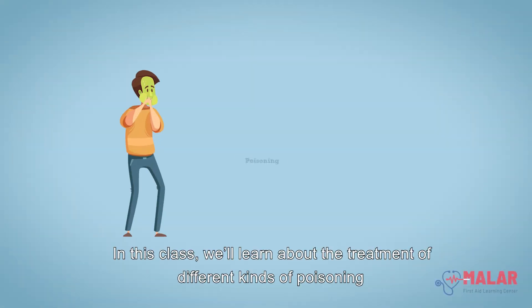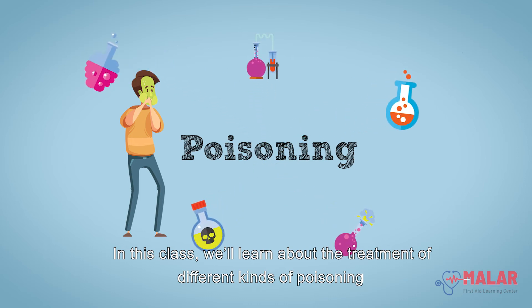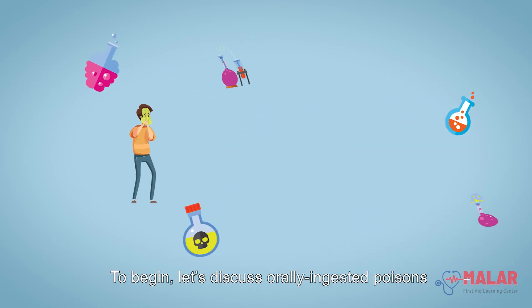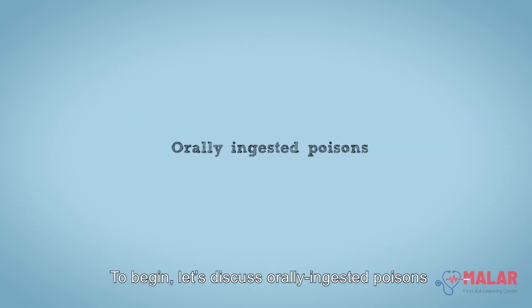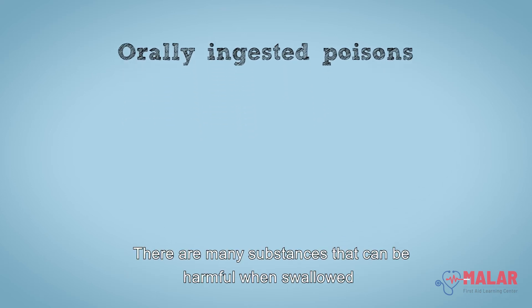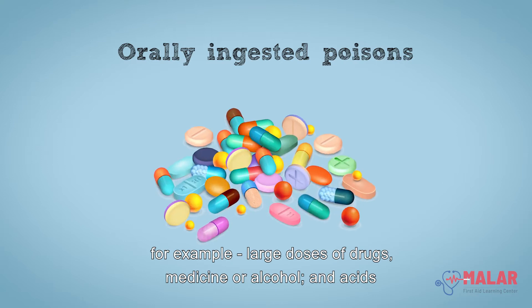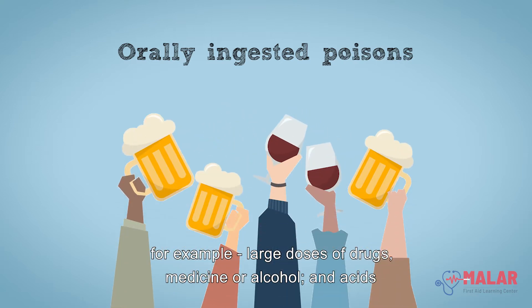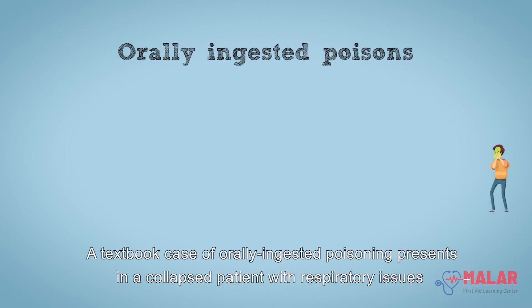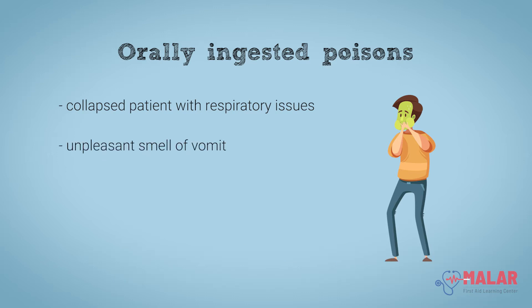In this class we'll learn about the treatment of different kinds of poisoning. To begin, let's discuss orally ingested poisons. There are many substances that can be harmful when swallowed, for example large doses of drugs, medicine, or alcohol, and acids.